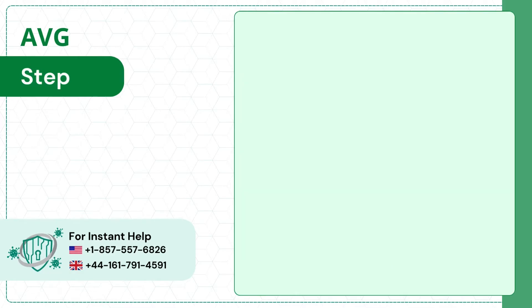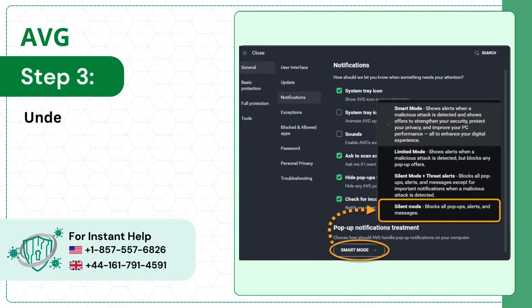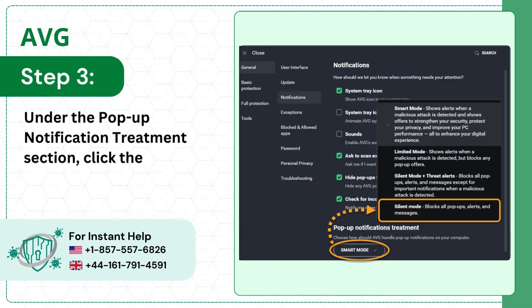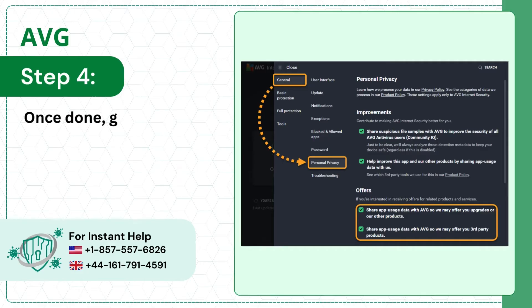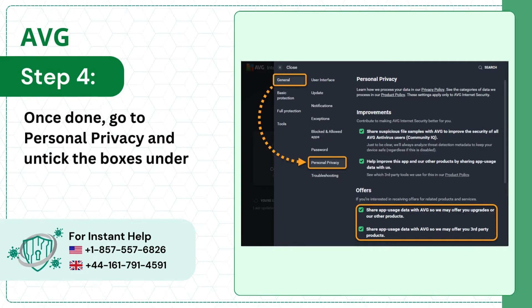Step 3: under the pop-up notification treatment section, click the drop-down and select silent mode. Step 4: once done, go to Personal Privacy and untick the boxes under Offers.